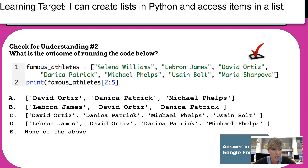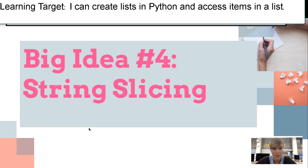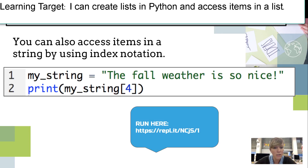Here's check for understanding number three. You have a list of famous athletes — make sure you put that correctly into your notes and the check for understanding. Go ahead and answer these questions on the Google Form. The next big idea is called string slicing, which uses the same idea of index notation but you're using it to access items in a string.